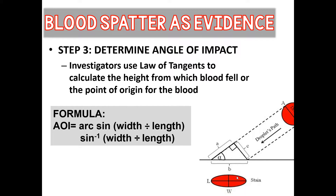Once investigators have the area of convergence, they use trigonometry to determine the angle of impact. They measure the length and width of the stain and plug those into the formula: angle of impact equals the inverse sine of width divided by length. So you take the width of the blood stain, divide it by the length, and then take the inverse sine of that number to get the angle of impact.